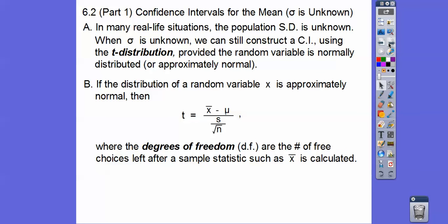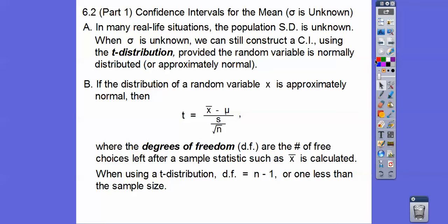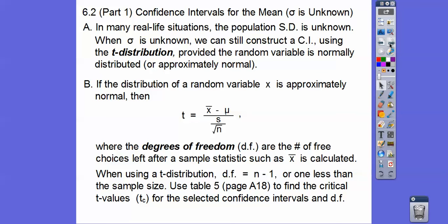The degrees of freedom are the number of free choices left after sample statistics such as the sample mean x-bar is calculated. When using a t-distribution, our degrees of freedom is always n minus 1 — one less than the sample size.